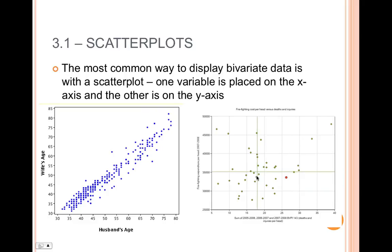This second scatter plot, the one on the right, this one's a little unusual, I just pulled this off of Google Images, but the x-axis appears to be the number of deaths and injuries per head in a certain city, and then on the y-axis is the amount of money that that city spent on firefighting. So they're probably trying to show that as the amount of money spent on their firefighting force increases, the number of deaths and injuries decreases. I have a feeling that's what they're trying to show. However, I see a lot of scatter in this scatter plot. I don't see any real patterns, so I don't know that they're really able to show what they're trying to show here, in that as one variable increases, the other decreases.